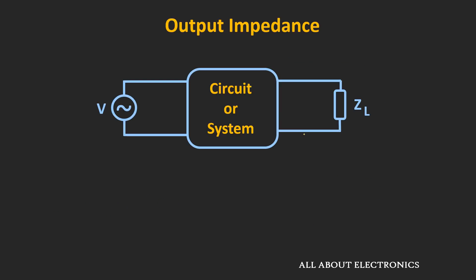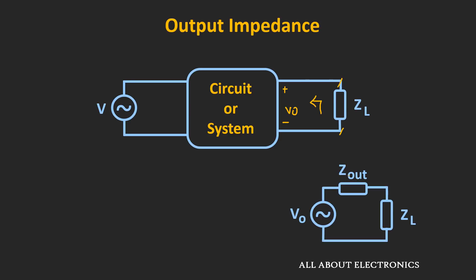Now let's understand about the output impedance. Let's say in the circuit we have connected some load at the output terminal, and the circuit is giving some output voltage VO. Ideally, this output voltage Vout should also appear across the two terminals of the load. But from the load's perspective, it will see some finite resistance in series with this output voltage. This finite resistance is known as the output impedance of the circuit. Because of this finite series resistance, the actual voltage across the load is Vo' = Vo × ZL / (ZL + Zout).